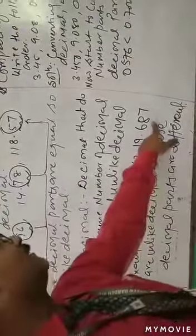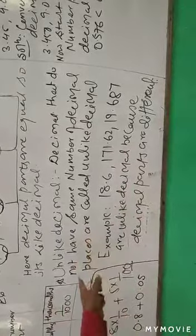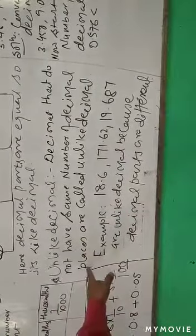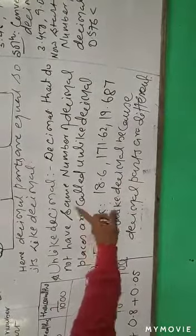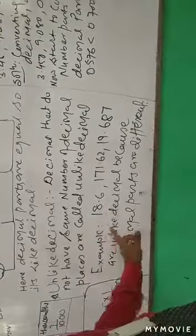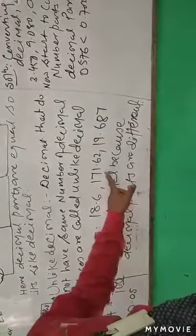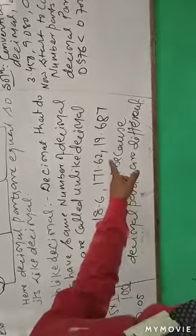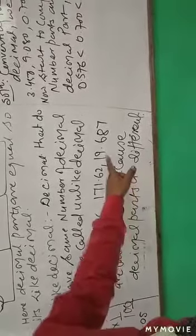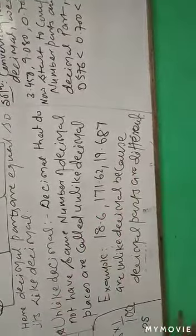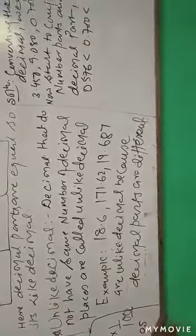These are different — the decimal part is different — so unlike decimals do not have the same number of decimal places. For example, 171.62 and 19.687 are unlike decimals because the decimal parts are different.